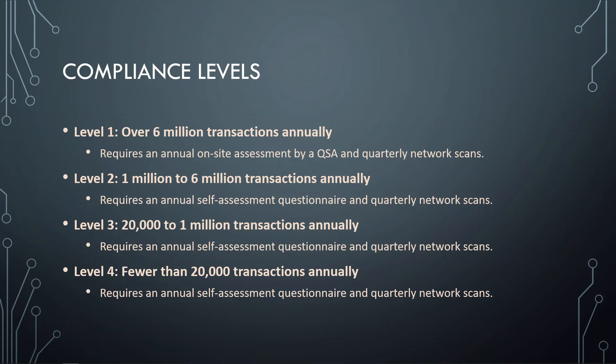Level three applies to transactions between 20,000 and one million annually, and level four is for fewer than 20,000 transactions annually. Both levels three and four require an annual self-assessment questionnaire and quarterly network scans performed by approved security vendors approved by the PCI Council.